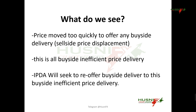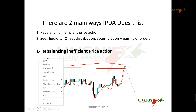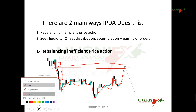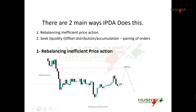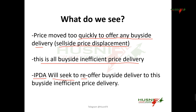So this is rebalancing inefficient price action. What we see in the chart right now is that price moved too quickly over any buy-side delivery — this is sell-side price displacement. As you can see, this movement here, and here, and here, is price moving too quickly. That is all buy-side inefficient price delivery. What the IBDA or algorithm will do is seek to recover that buy-side delivery to this buy-side inefficient price delivery.